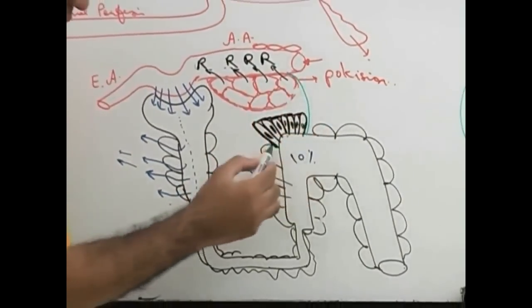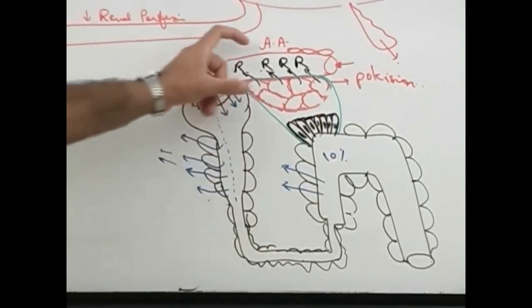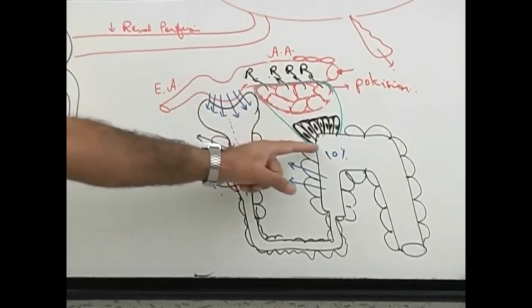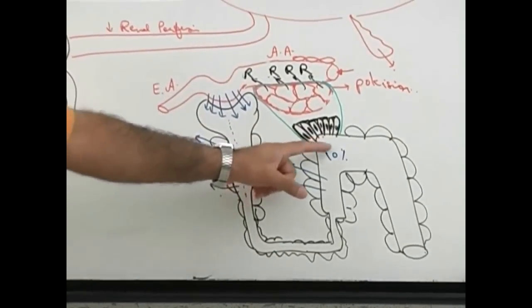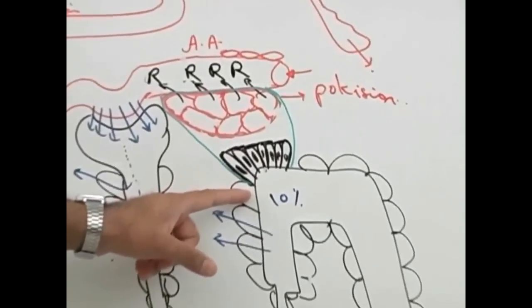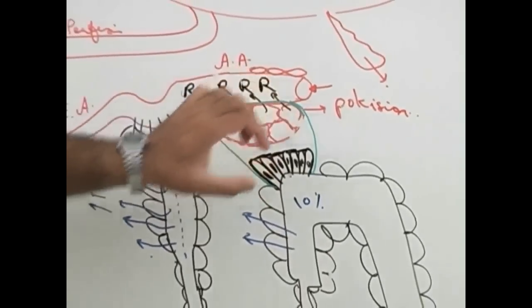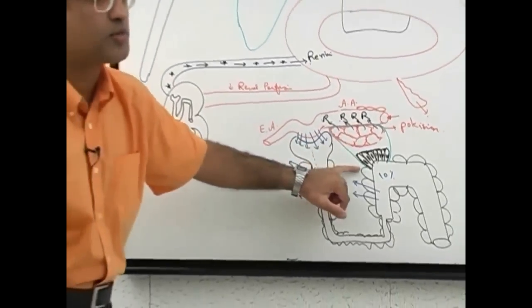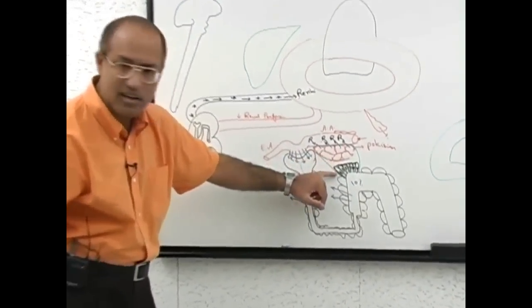This system together make a whole apparatus. Afferent arteriole with polkacin and this specialized group of cells from distal convoluted tubule make one specialized apparatus. These acting as the baroreceptors and these acting as the chemoreceptors. They measure the blood pressure, they measure the sodium concentration.